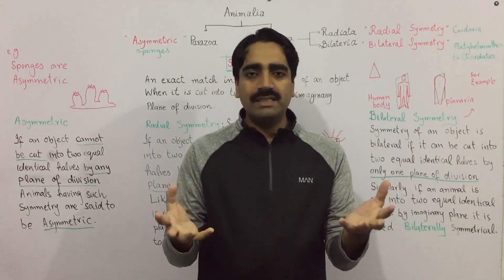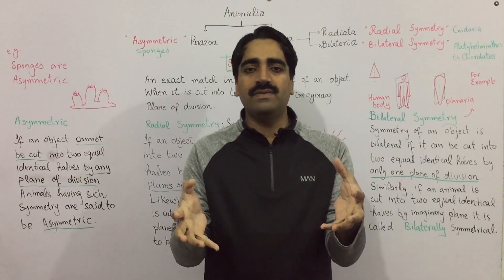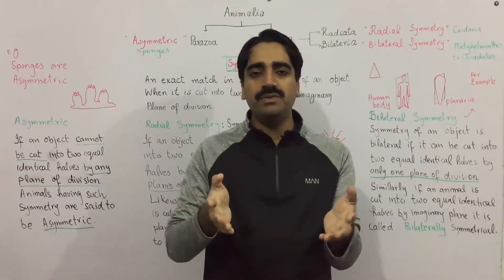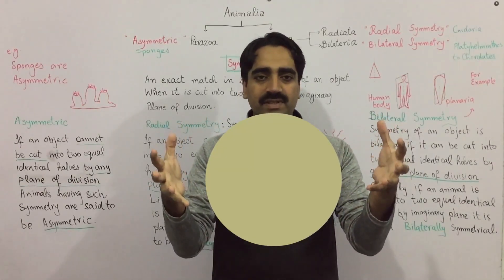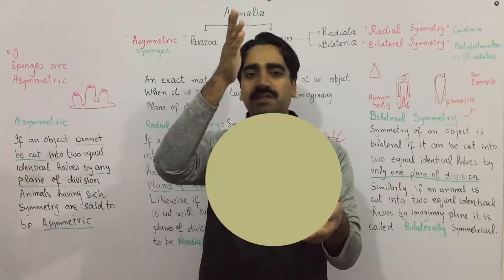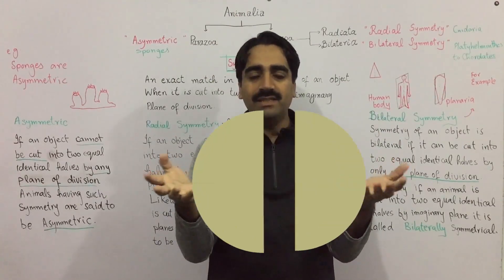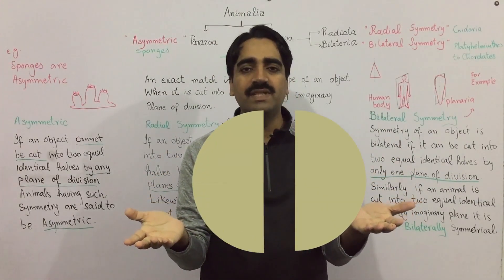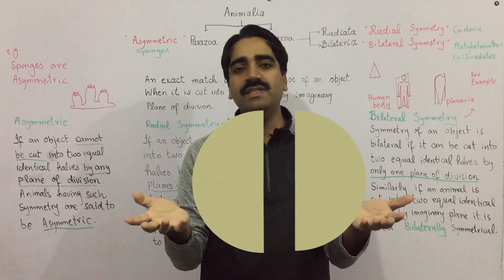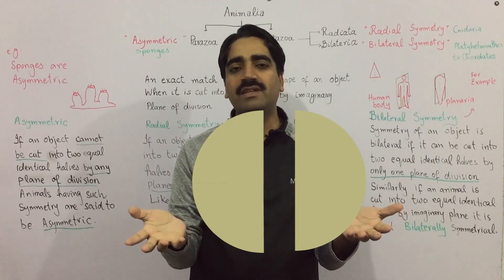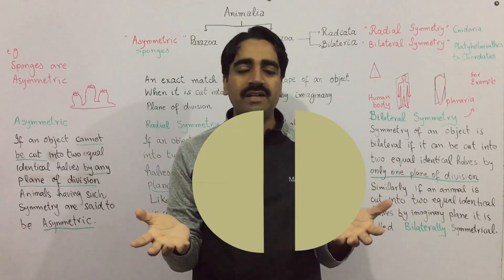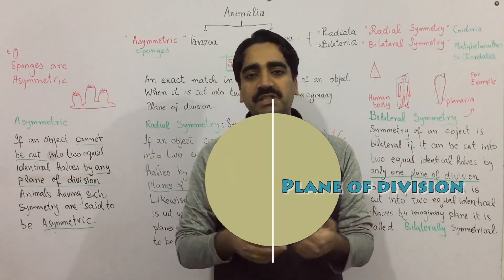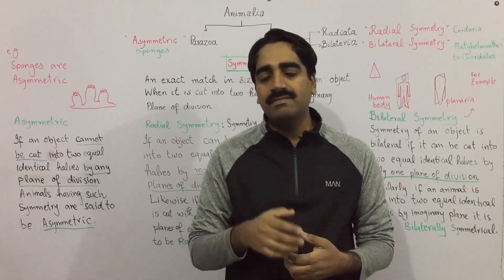Let's consider a sphere. If you cut the sphere by the plane of division, the resulting halves are a mirror image of each other, the resulting halves are identical to each other, and the cutting plane is passing through the center.